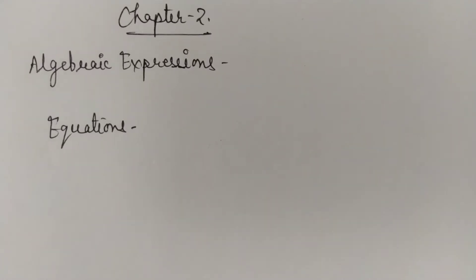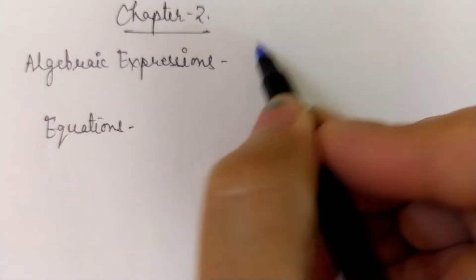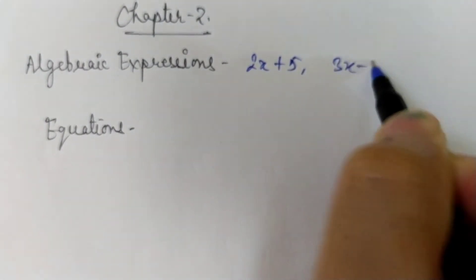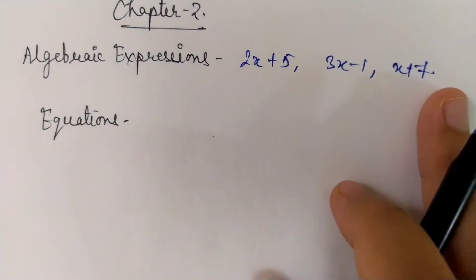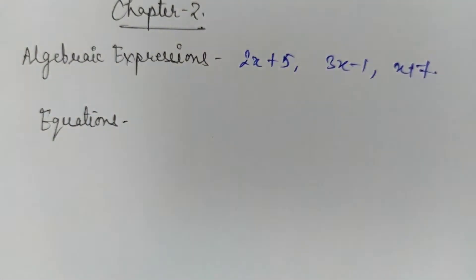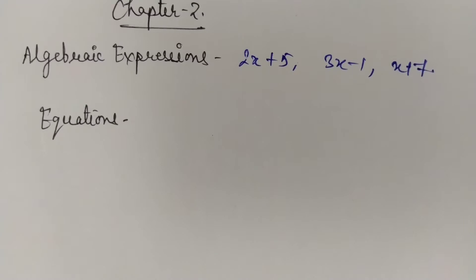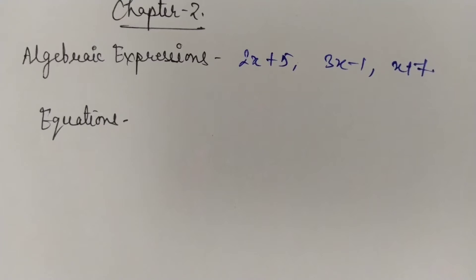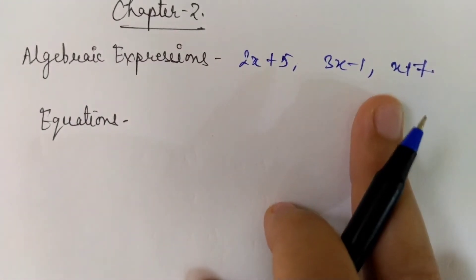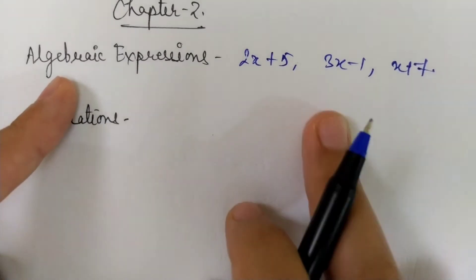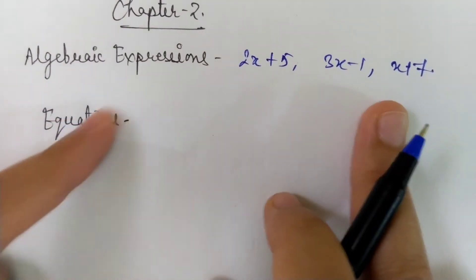You have seen expressions like 2x plus 5, 3x minus 1, x plus 7 — these are called algebraic expressions. Algebraic expressions are expressions containing variables and constants, and having mathematical operations in them. The four mathematical operations are addition, subtraction, multiplication, and division. These are called algebraic expressions because they contain algebra.